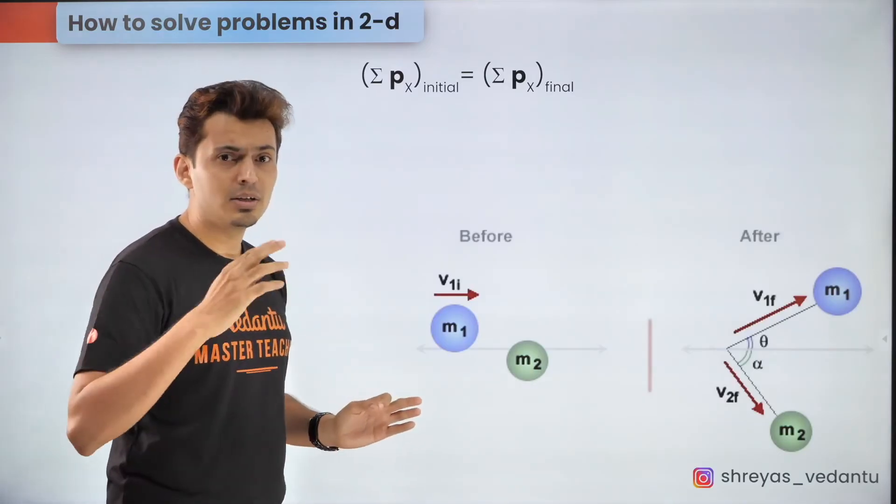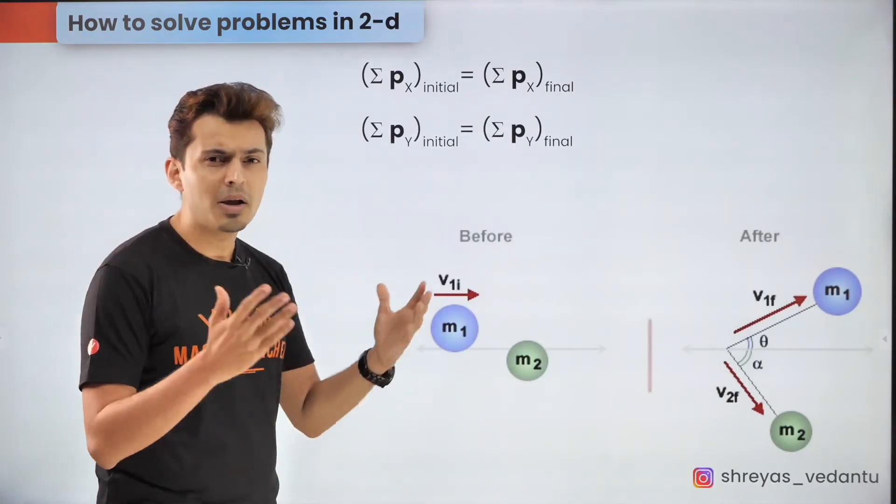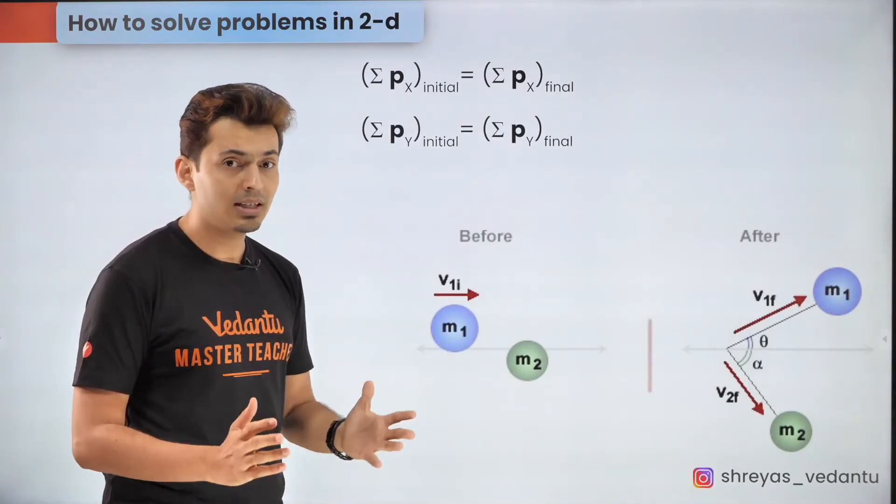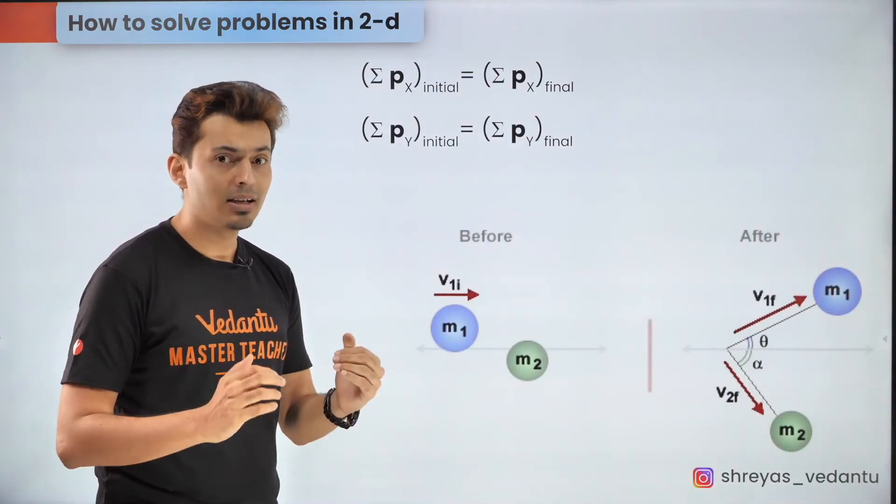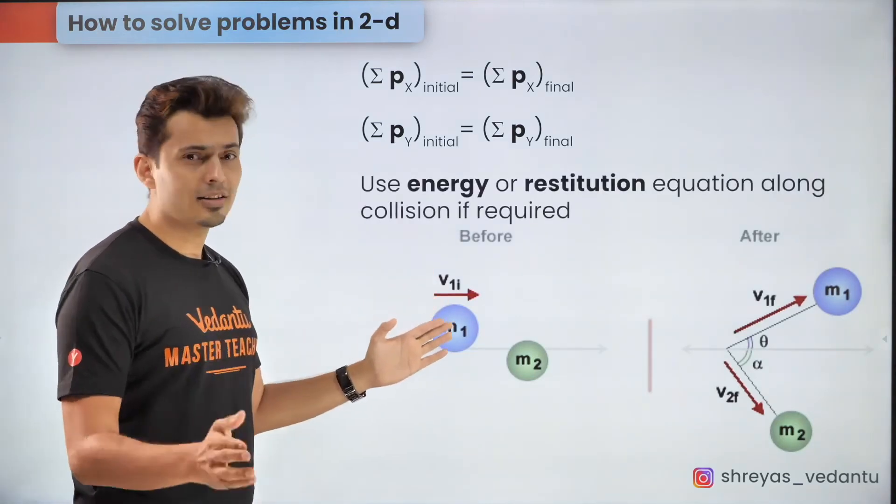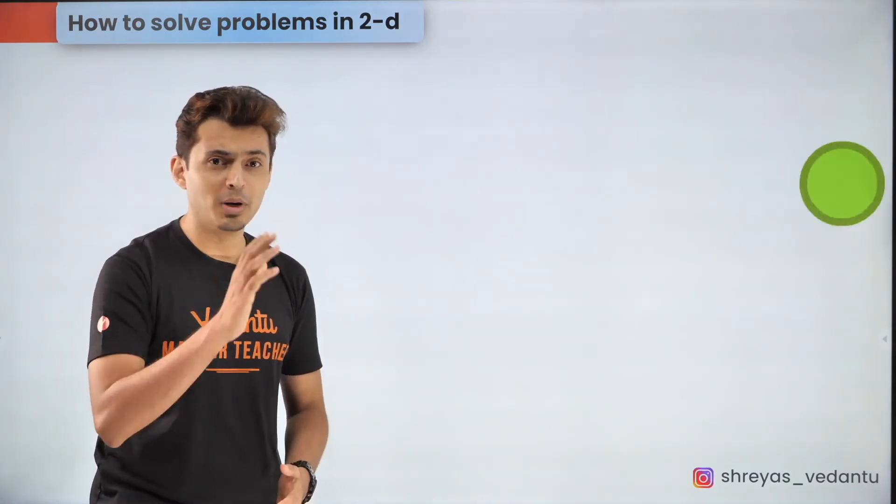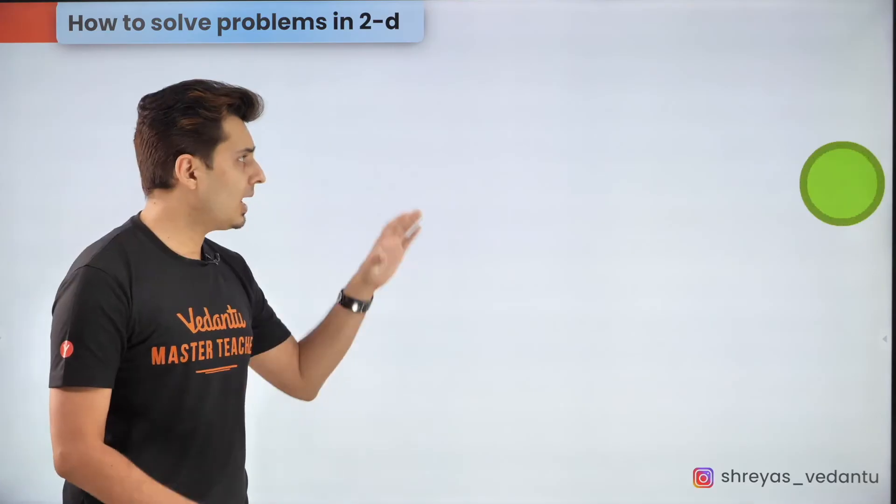If the collision is happening in 2 or 3D then you need to write additional equations in y or z direction. Now if still the number of equations are less than the number of unknowns you might find additional equations from the energy or the restitution equations. You can also use a simple trick for two-dimensional collision when you have a ball which collides with a smooth inelastic surface.